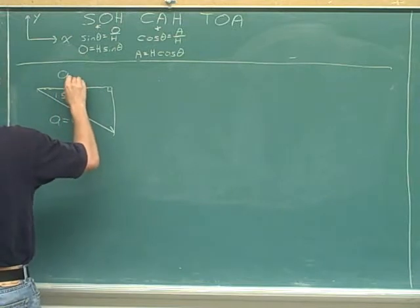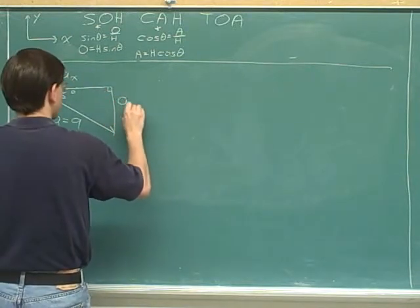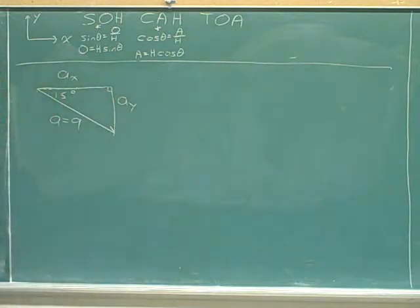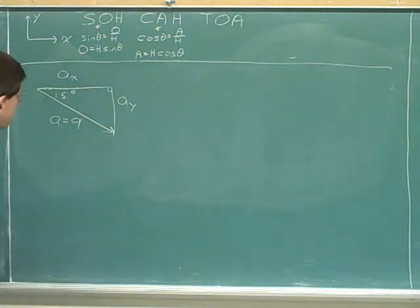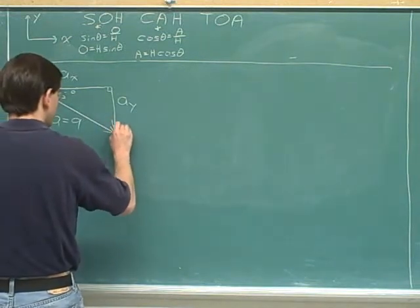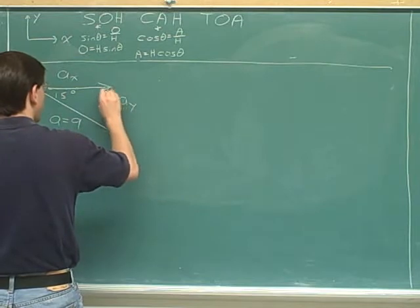Let's label the size. I hope that's becoming automatic for you, labeling each part of your triangle. Another thing that should be automatic is putting in the arrows. The overall vector was pointing down and to the right, so we should have components pointing down and to the right.